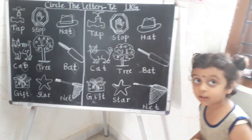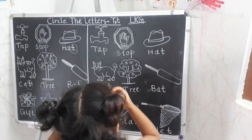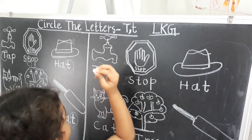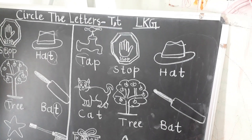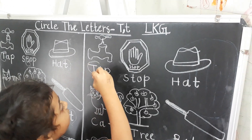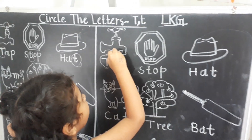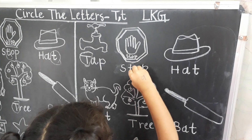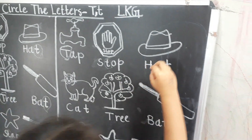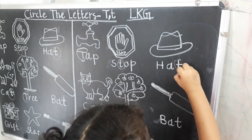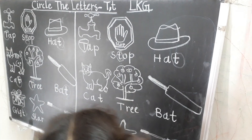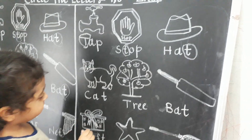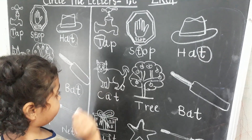Good job. Shreya, now your turn. Can you circle capital T and small t? Capital T and small t. Come on, circle it, Shreya — you know how to circle. Capital T, small t. Awesome. Capital T, small t. Whatever the letter — capital T, small t — yes. Wherever you are finding letter T, you must circle it, whether it is capital or small.